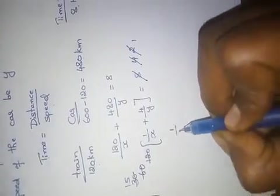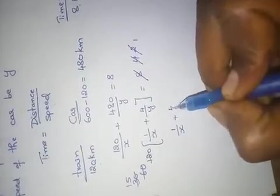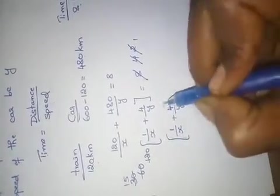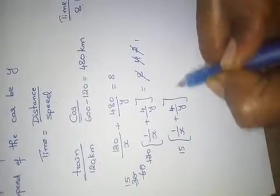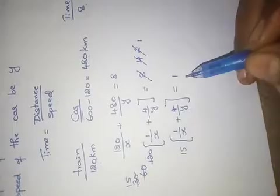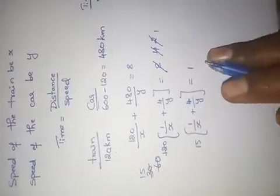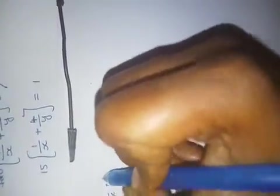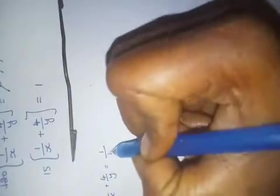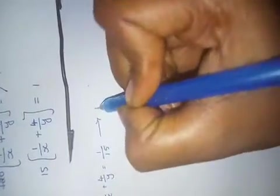The equation we got is 1/x + 4/y. Then, 15 times (1/x + 4/y) equals 1. Sending the 15 to the other side gives division, so the equation becomes: 1/x + 4/y = 1/15. Let it be equation 1.